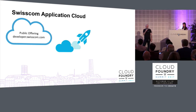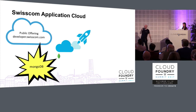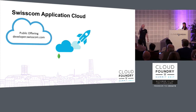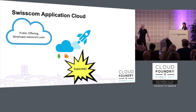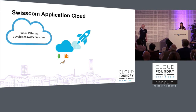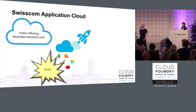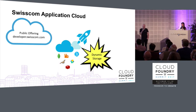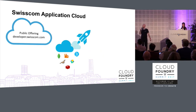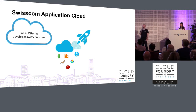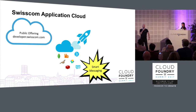They mostly consist of the usual suspects. We have MongoDB, RabbitMQ, MySQL based on MariaDB, Elasticsearch, Redis, and an S3-compatible object storage named Dynamic Storage. And since we are a telecommunications provider, we also have a service called Smart Messaging, which is essentially a fancy name for SMS.